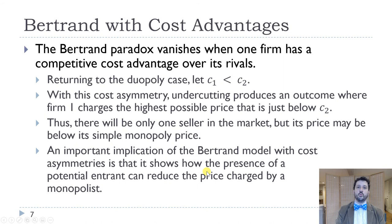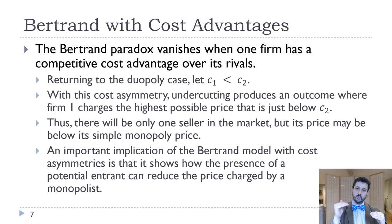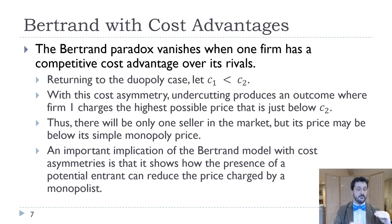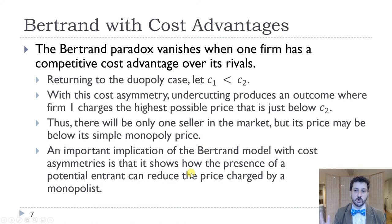In Cournot, even when one firm has a cost advantage, both firms can still produce as long as the advantage isn't too large. In Bertrand with asymmetric costs, the Nash equilibrium logic holds until you reach firm two's marginal cost C2. Firm one can then cut its price just below C2, which is still above its own marginal cost, firm two produces nothing, and firm one captures all the profits — though at a price just below C2, not the monopoly price. If firm one tries to charge the monopoly price, firm two re-enters the market.